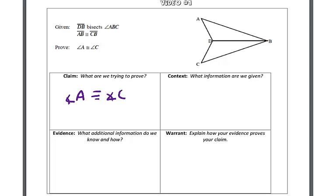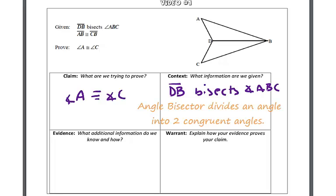What information are we given? We know that DB bisects angle ABC. If we recall from our previous chapter, when an angle is bisected, it's split into two congruent angles. So we know that angle ABD is congruent to angle CBD.